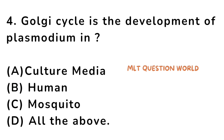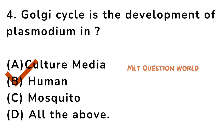Next question. Golgi cycle is the development of Plasmodium in: option A. Culture media, option B. Human, option C. Mosquito, option D. All of the above. The right answer is option B, Human. Golgi cycle is the development of Plasmodium in human.